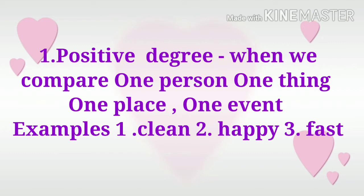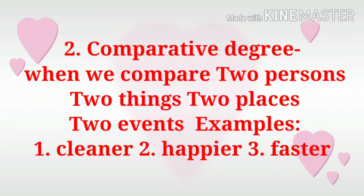Let's now move to the second degree, which is the comparative degree. This is used when we compare two persons, two things, two places, or two events. For example: cleaner, happier, faster. In this example, we change the Y in the word happy, and then we add I-E-R. We change Y into I and then add ER to the word happy. It becomes happier. The examples in comparative degree are cleaner, happier, faster.